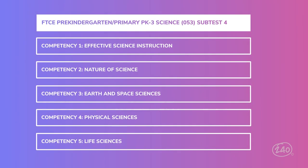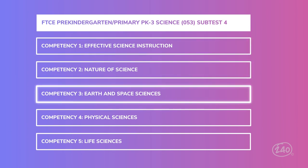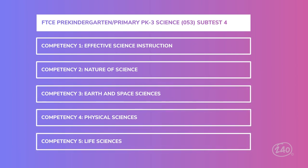The FTCE Pre-K 3 science subtest consists of five competencies. You'll need to have knowledge of effective science instruction, the nature of science, earth and space sciences, physical sciences, and life sciences. Each competency is worth between 17 and 25 percent of your exam.